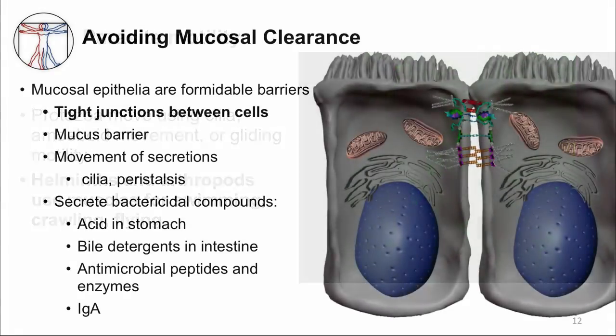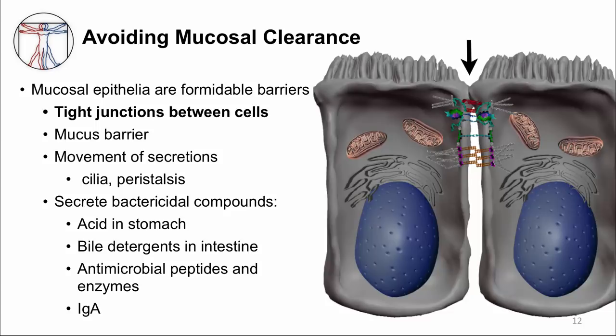Colonization involves more than just movement because the body can be a very harsh environment to a microbe. The mucosal surface is equipped with numerous mechanisms to prevent microbes from getting in. Tight junctions, which you can see by the arrow, glue cells together creating a really tight barrier that doesn't allow microbes to penetrate. Microbes need to interact with the cell in order to invade.